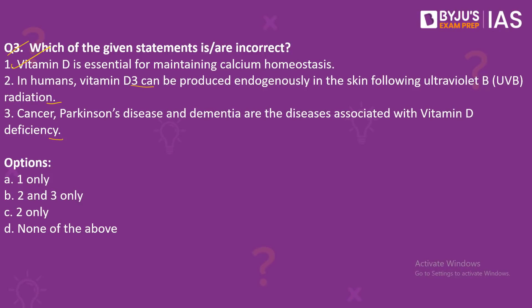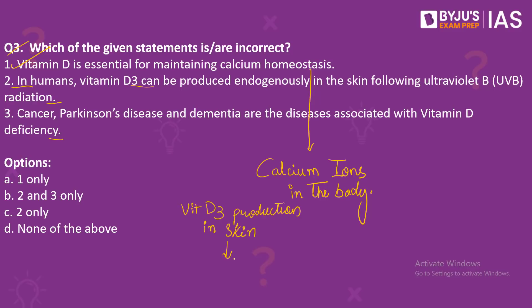Statement 1 is correct because Vitamin D is needed for calcium homeostasis — the maintenance of constant concentration of calcium ions in the body. Vitamin D is the principal factor that maintains calcium homeostasis, and evidence suggests that disturbed calcium balance with age is due to inadequate Vitamin D levels in the elderly. Statement 2 is also correct: Vitamin D3 is produced endogenously in the skin following UVB radiation, and is then converted to the major circulating form, 25-hydroxy Vitamin D3.